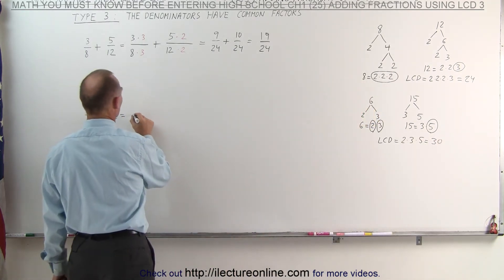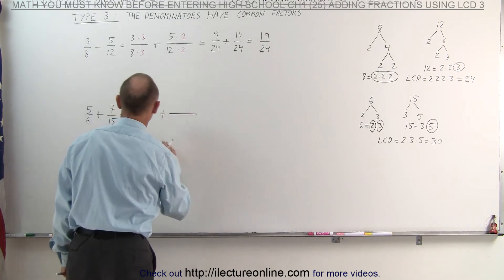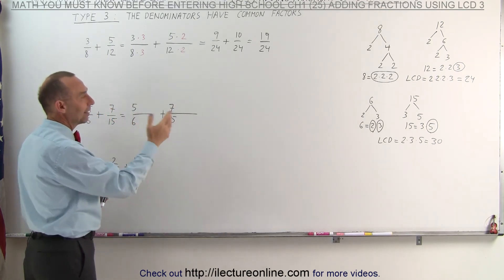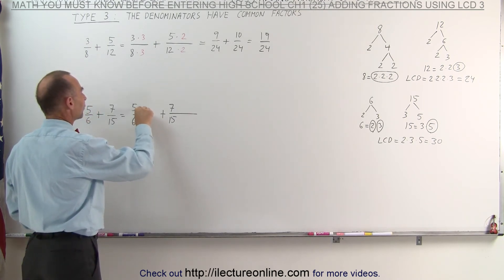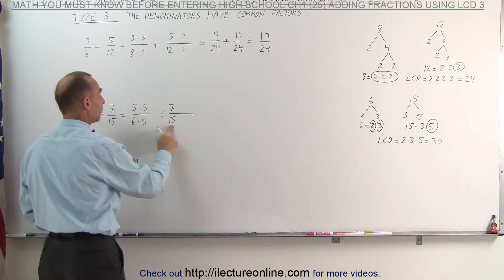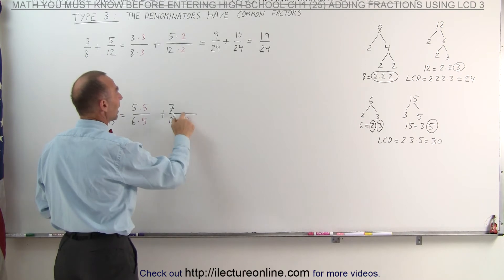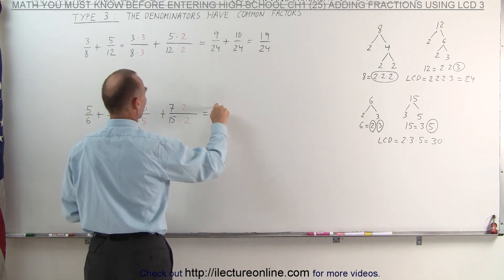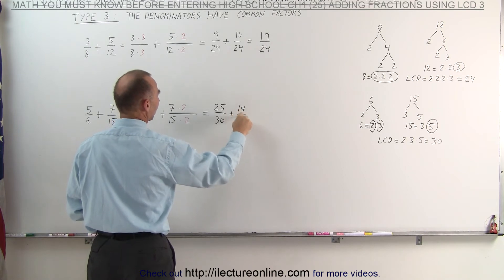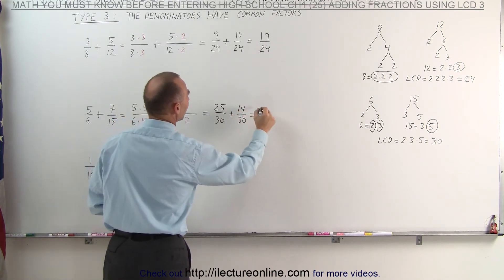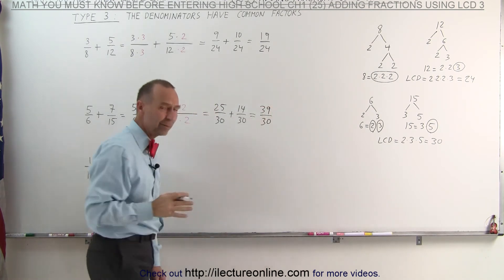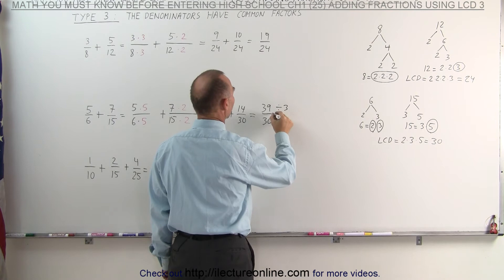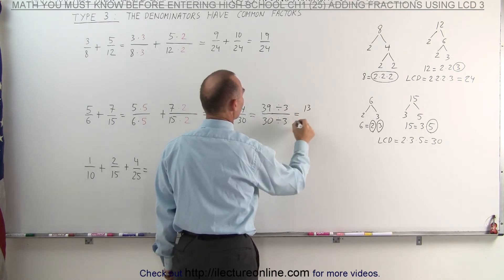The lowest common denominator is 30, which means we have to change the two fractions so that their denominators become 30. On the first fraction, I multiply 6 times 5 to get 30, so I must multiply the denominator times 5, and of course also the numerator times 5. On the second fraction, I multiply 15 times 2 to get 30, so I must also multiply the numerator times 2. The two fractions now become 25 over 30 plus 14 over 30. Since the denominators are the same, I add the numerators to get 39 over 30, which can be simplified: dividing both numerator and denominator by 3 gives 13 over 10.